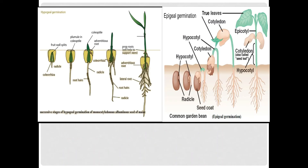Now we want to distinguish between hypogeal and epigeal germination. In hypogeal germination cotyledons remain inside or below the soil, but in epigeal germination cotyledons emerge above the soil. In hypogeal germination cotyledons play no role in photosynthesis, but in epigeal germination cotyledons turn green and act as the first leaves of the plant. In hypogeal there is greater elongation of the epicotyl, but in epigeal there is greater elongation of the hypocotyl. In hypogeal the terminal part of the epicotyl is straight, but in epigeal the terminal part of the hypocotyl is curved to protect the plumule from friction of the soil. In hypogeal, energy for growth is primarily derived from the endosperm, but in epigeal, energy for growth is primarily derived from the cotyledons.